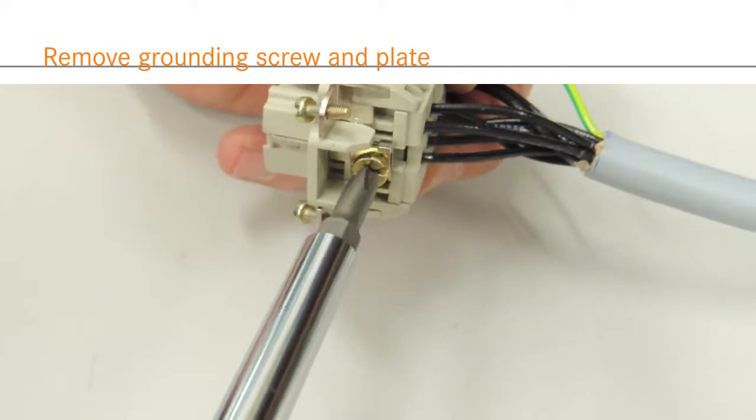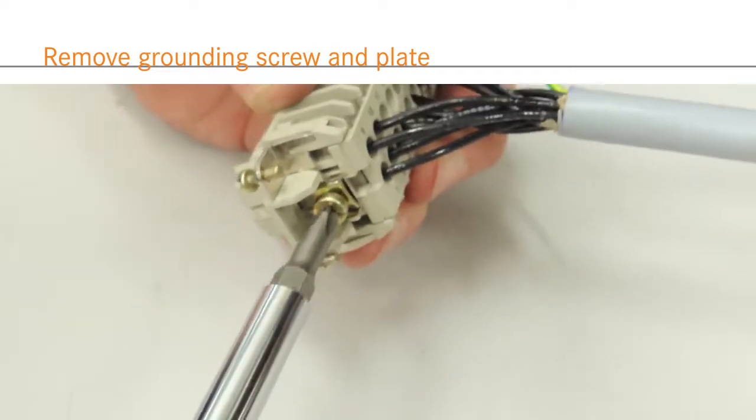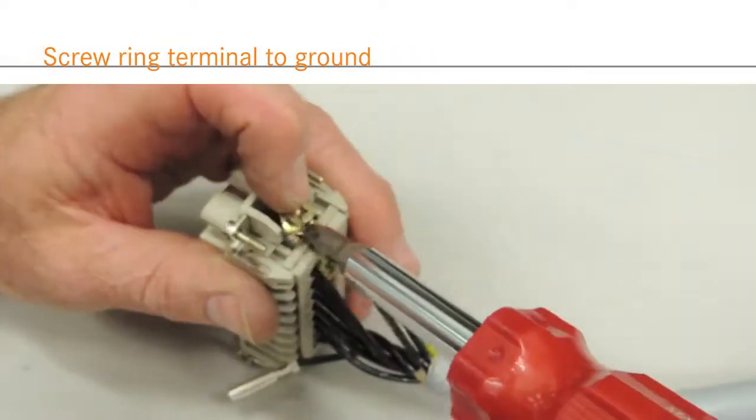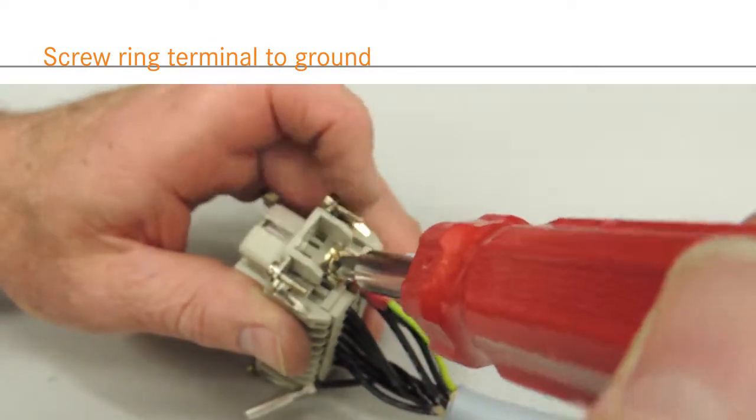To wire the ground, first remove the grounding screw and plate. Position the ground terminal under the grounding screw and plate and affix back in place.